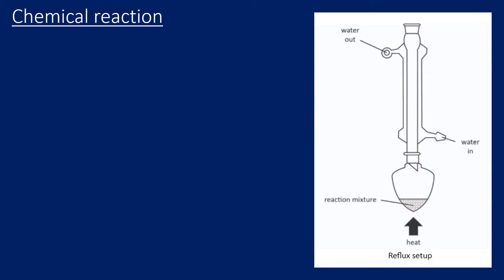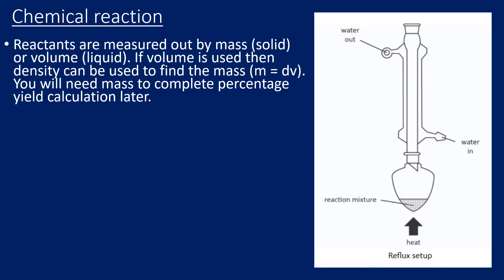For the chemical reaction stage, the first thing we would need to do is measure out our reactants — either by mass if a reactant was a solid, or by volume if the reactant was a liquid. When we do the percentage yield calculation, we will need the mass. So it's quite common to be given the density and calculate the mass, because mass equals density multiplied by volume.